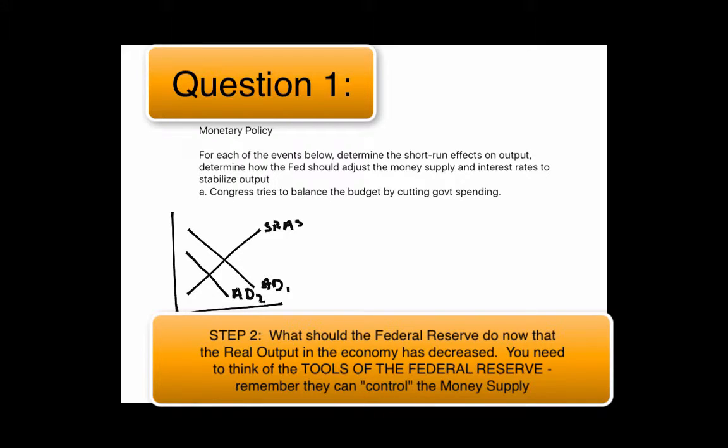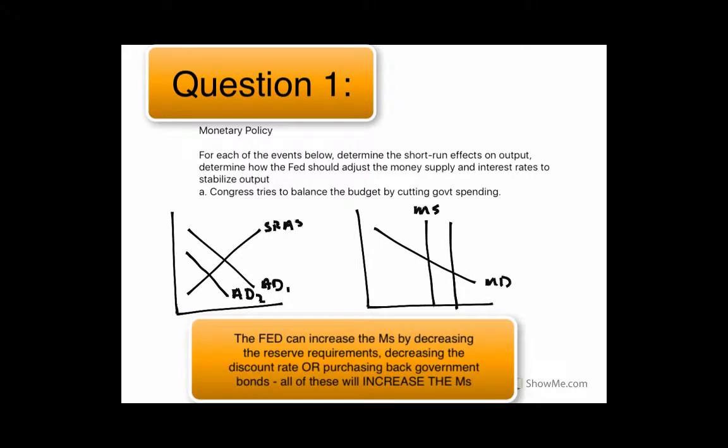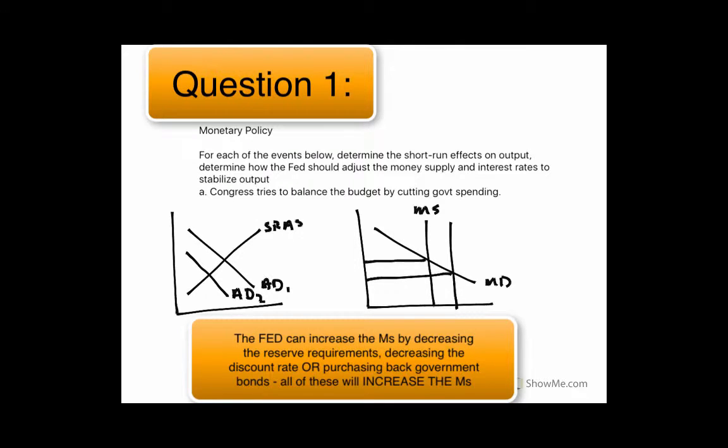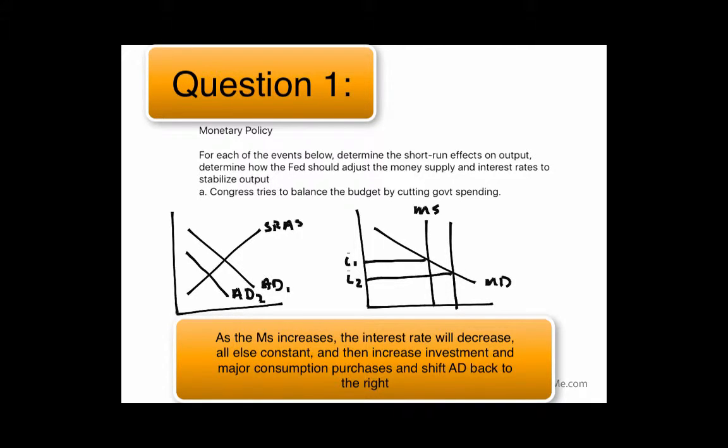So what the Federal Reserve should do then is, the Fed can influence this money supply here. What they can do is try and increase the money supply to decrease the interest rate from I1 to I2. And if the Federal Reserve decreases the interest rate,